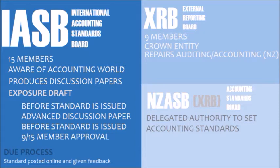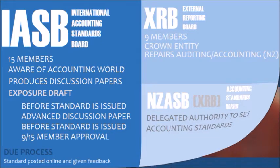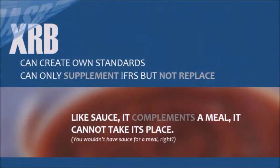Before a standard is issued there will always be an exposure draft. It is more like an advanced discussion paper — like a mini standard. Once again there is due process and comments are collected. 9 out of 15 members have to approve. The NZASB receives the IASB standard and submits it to the XRB for approval.